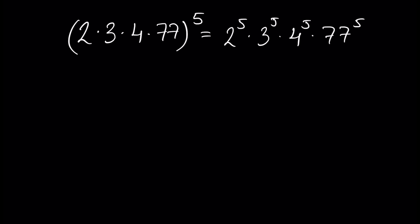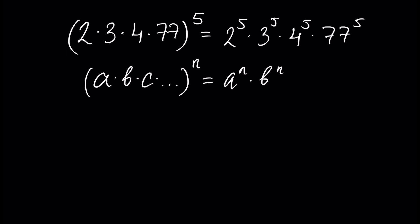The general formula is written as: assume we have numbers a times b times c, and so on, all raised to the power of n. In this case this equals a to the power of n, times b to the power of n, times c to the power of n, and so on.